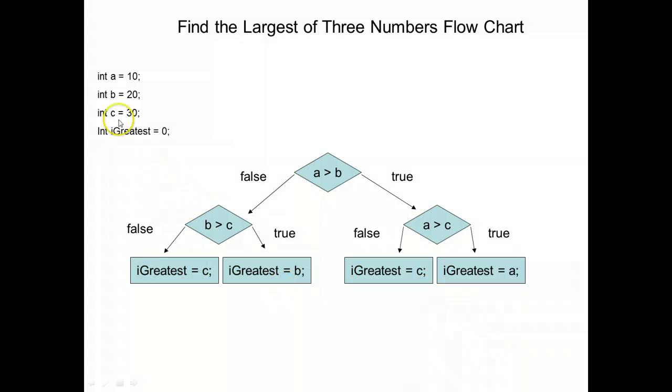We will have three integers: A with a value of 10, B with a value of 20, and C with a value of 30.